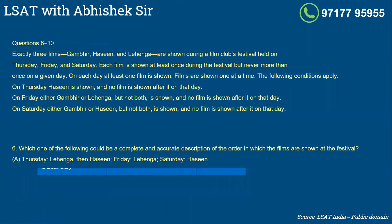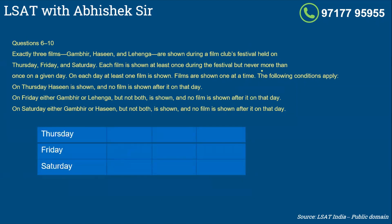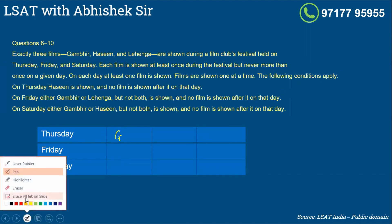you have 3 days: Thursday, Friday, and Saturday. And you have 3 slots. You need not use all of them but the maximum that you can use in any day would be 3 slots. So you can show all the movies. Now look at the conditions. The condition says that each film is shown at least once during the festival, which means Gambhir as a movie has to be shown at least once, but never more than once a given day. So Gambhir you have to show in either one of these 3 days, but if you've shown Gambhir on Thursday, you cannot show Gambhir any more time on that Thursday.